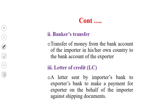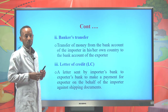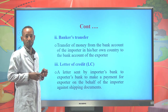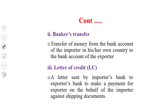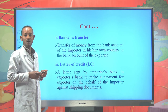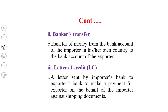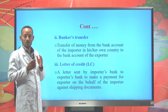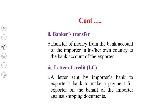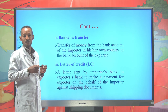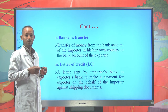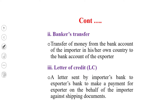Banker's transfer is the second mode of payment in international trade. It is the transfer of money from the bank account of the importer in his or her own country to the bank account of the exporter. The third mode is letter of credit — a letter sent by the importer's bank to the exporter's bank to make a payment for the exporter on behalf of the importer against shipping documents. This is accomplished through the advising bank and the confirming bank. Letter of credit is the safest mode of payment, and nowadays more than 90% of international trade payments are accomplished through it.